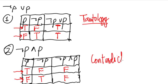Since 'not P and P' is false no matter what, this is what we call a contradiction — when the truth table always gives false values in every possible case.